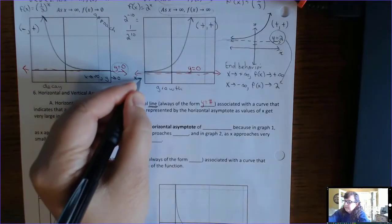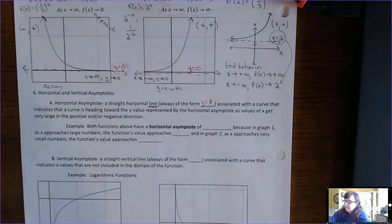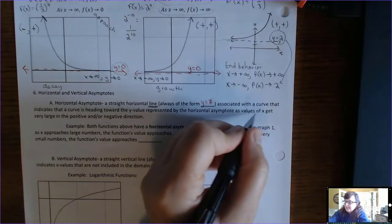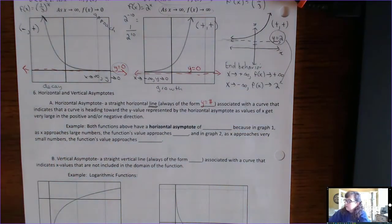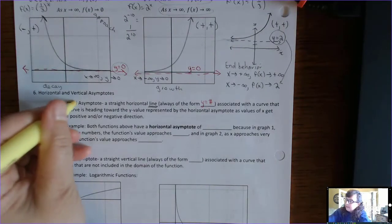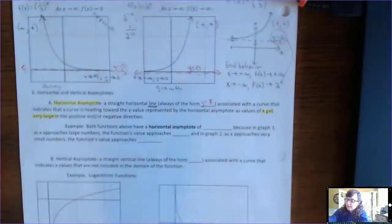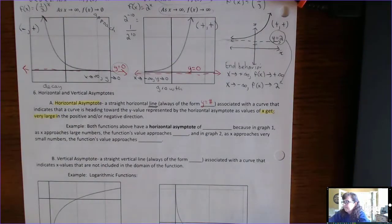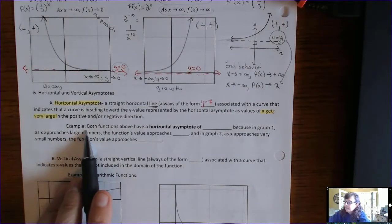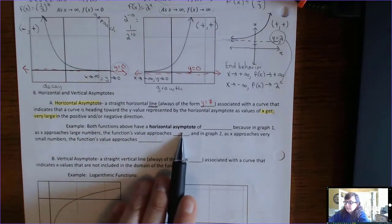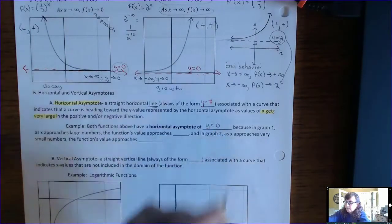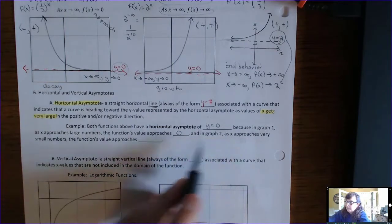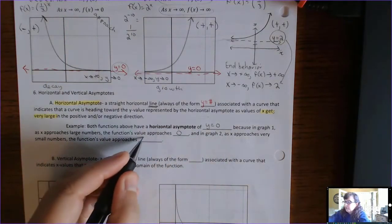As x approaches negative infinity, y approaches 0. The horizontal asymptote idea has to do with what happens when x gets very large, positive or negative. So the graph is going to show a horizontal line. Both functions above have a horizontal asymptote of y equals 0 — in graph 1, as x approaches large numbers, the function's value approaches 0; and in graph 2, as x approaches very small numbers, the function's value approaches 0.